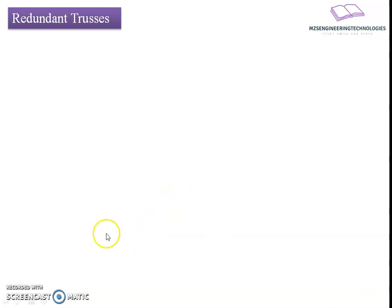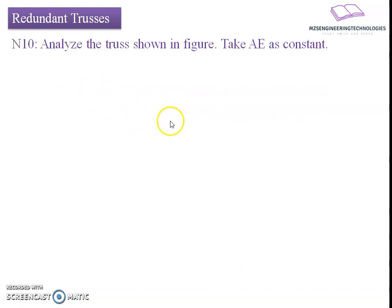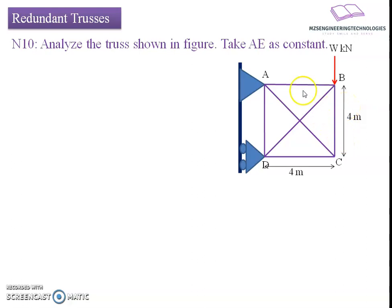Greetings. Let us continue with the analysis of a redundant frame, numerical number 10: analyze the truss shown in figure, take AE as constant. The given frame is a single-bay frame having support over a vertical wall. Joint A has a hinge support while joint D has a roller support. At joint B, a vertically downward load W kilonewton acts. The bay width is 4 meters and the height of the frame is 4 meters. We need to find the member forces within this assembly.